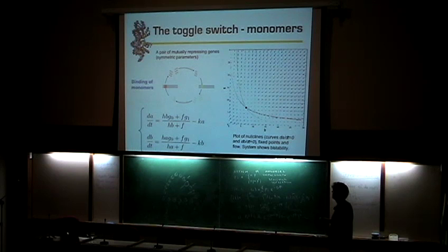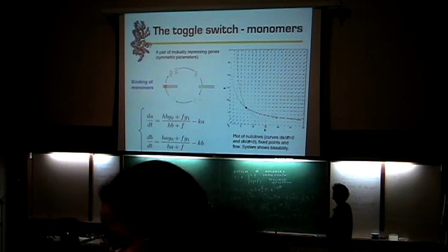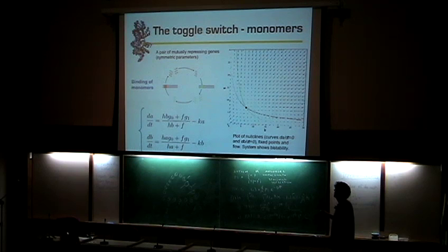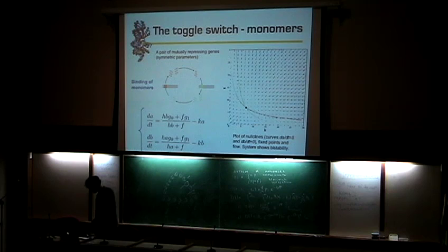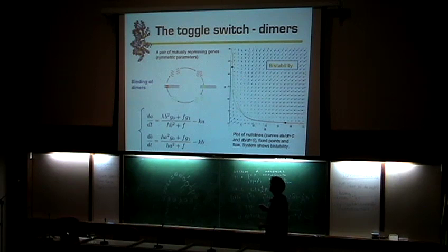If you plot the probability distribution, you'd see one peak over here and all the arrows point to that point. But if you have dimers - the Hill coefficient is two - with cooperative binding, you can have these nullclines intersecting at two different points, and then you have bistability. You can see that the arrows on one side point to this stable state and the arrows on the other side point to that stable state. So now we're going to do the stochastic methods.